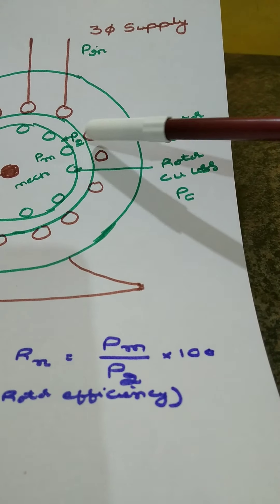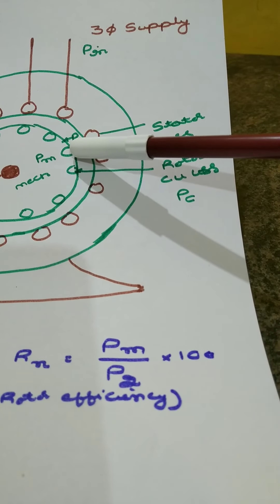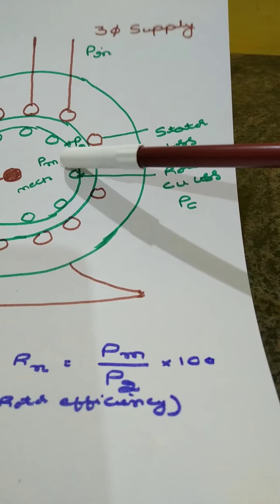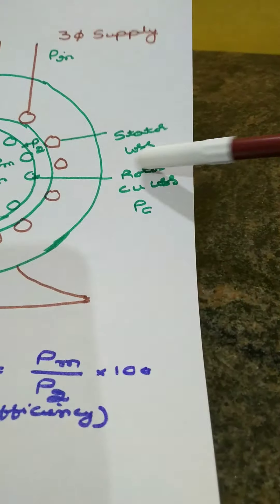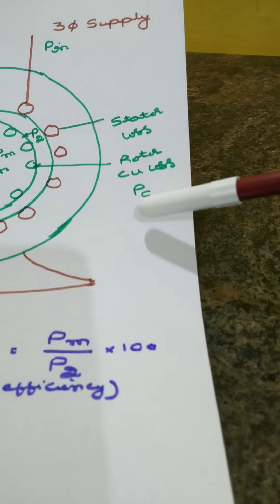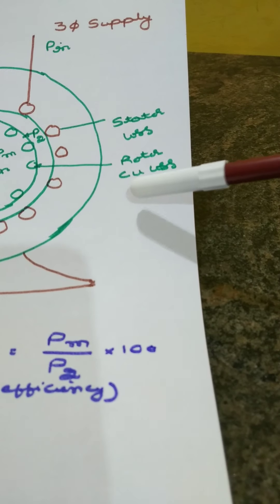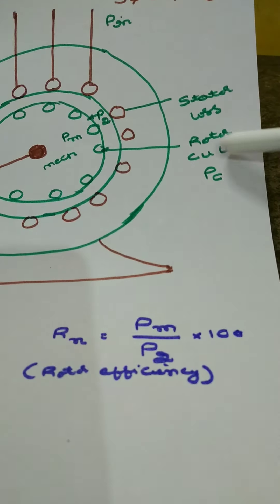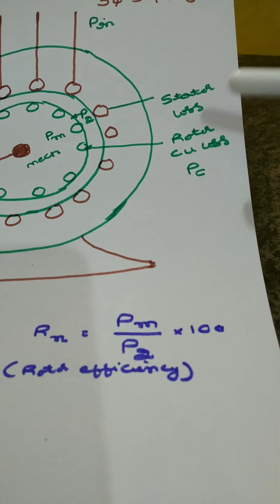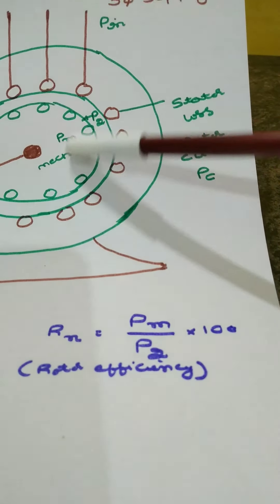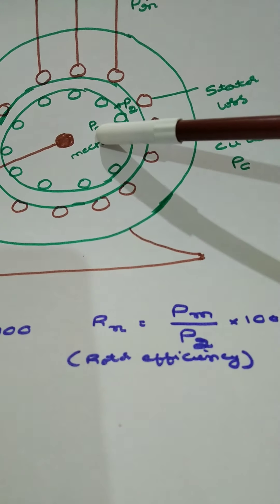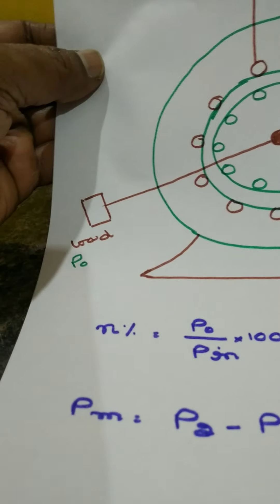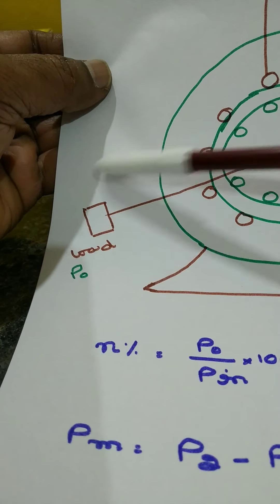The output from the stator — or rotor input — is P2. In the rotor winding, current flows and rotor copper losses occur, represented by PC. Rotor core loss is neglected because under running condition frequency is less. P2 minus PC gives the gross mechanical power developed, called PM. PM minus friction and windage losses gives the shaft power at the load — this is the useful power at the load side.